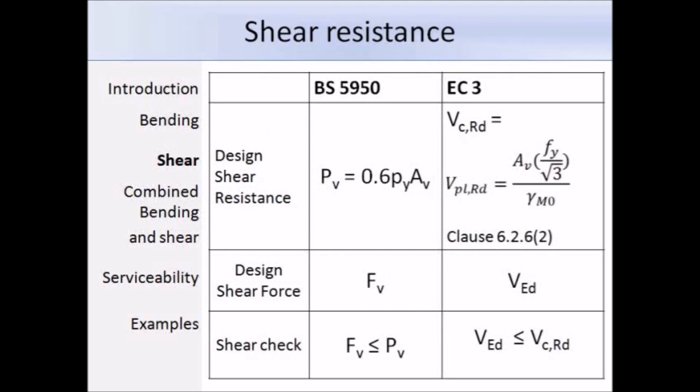Here we have a table comparing the two methods of working out the shear resistance using BS5950 and EUR3. This top row shows the expression to work out the design shear resistance. For EUR3, we have the shear area A_v times the yield stress over the square root of 3, divided by the partial factor gamma M0. We can compare that to the BS5950 expression. One over the square root of 3 is equal to 0.577, which is very close to 0.6, therefore the two expressions are very similar.